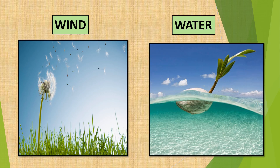Seeds of plants growing in water or near water bodies are dispersed by water. These seeds are light in weight and able to float. The spongy fruit of the lotus and the fibrous outer covering of the coconut make them light, helping the seed to float on water and move to long distances.